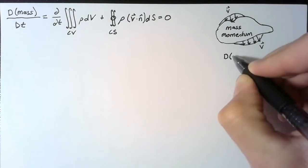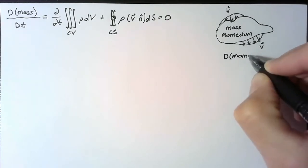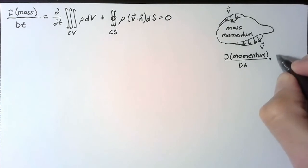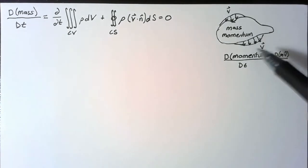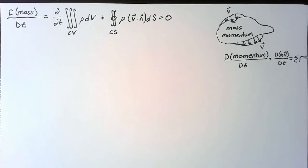So we're interested in looking at the material derivative of momentum. Momentum is just mass times velocity, and if we're following the fluid around, we're seeing how the momentum of that fluid is changing. This is the same thing as mass times the acceleration of the fluid. So we could also say that this is just the sum of the forces.